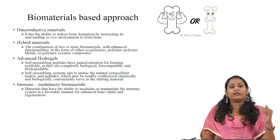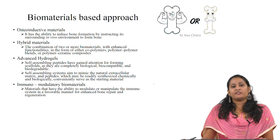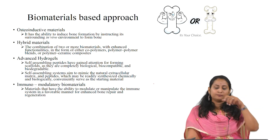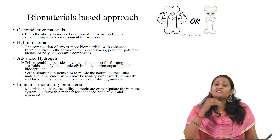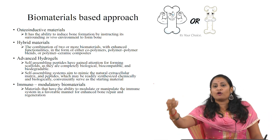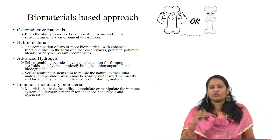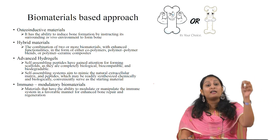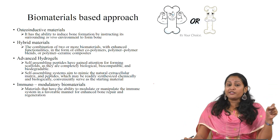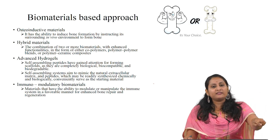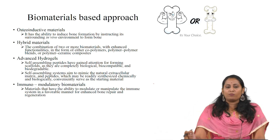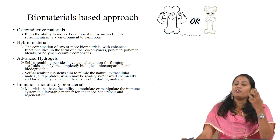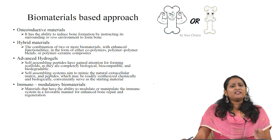Biomaterials are classified into osteoinductive materials, hybrid materials, advanced hydrogels, and immunomodulatory materials. The first category is osteoinductive materials. The word osteoinduction means it instructs the surrounding stem cells for the formation of bone. So an osteoinductive material has the ability to induce bone formation by instructing surrounding cells in the in vivo environment to form bone. For example, hydroxyapatite, calcium phosphate, or ceramic-based materials are prone to have osteoinductive properties.